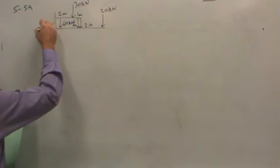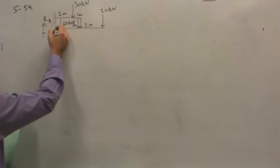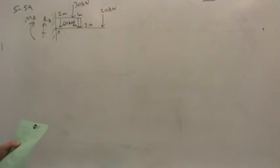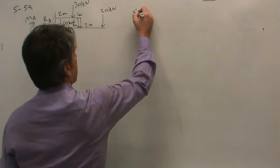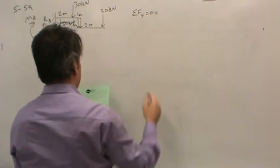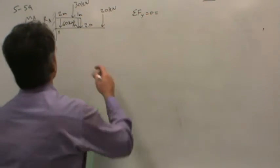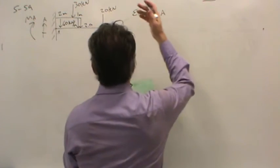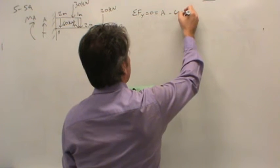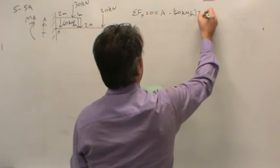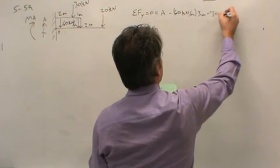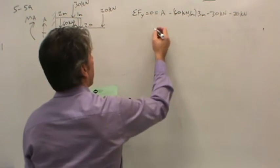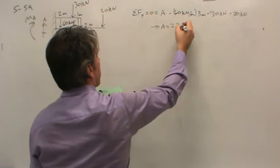The first thing I did is calculate the reactions. Let's call this point A. So there's a moment reaction as well as a force reaction. So to get the force reaction first, sum forces in the y direction should come up to zero. I just called it A. So A is acting upward. All the other loads are acting downward. So minus 60 kilonewtons per meter multiplied by 3 meters worth minus 30 kilonewtons point load minus 20 kilonewtons in the other point load. And so A comes up to 230 kilonewtons.